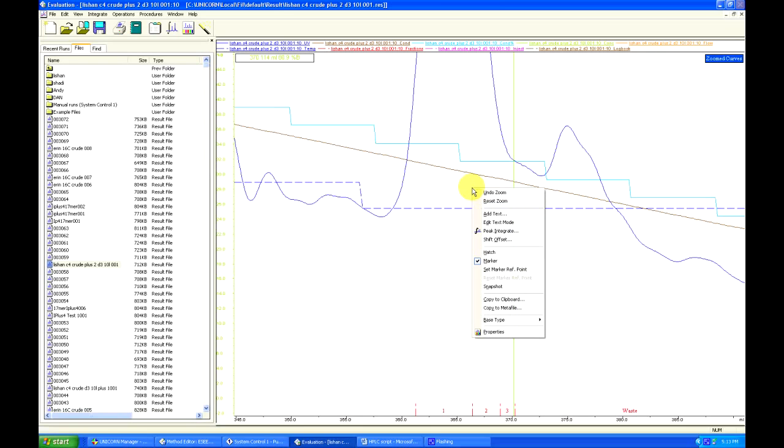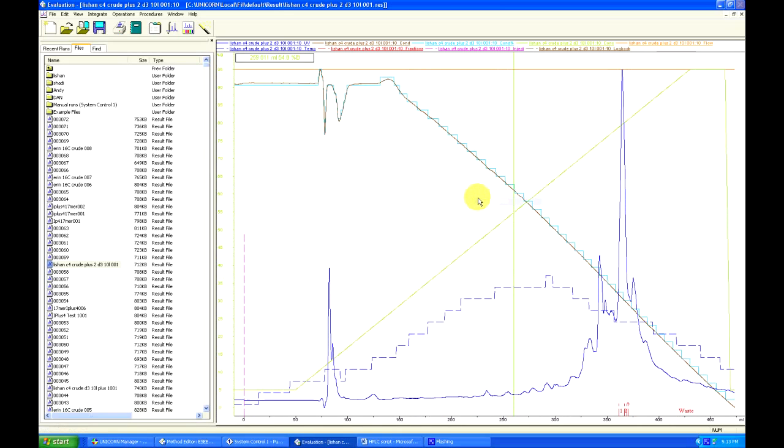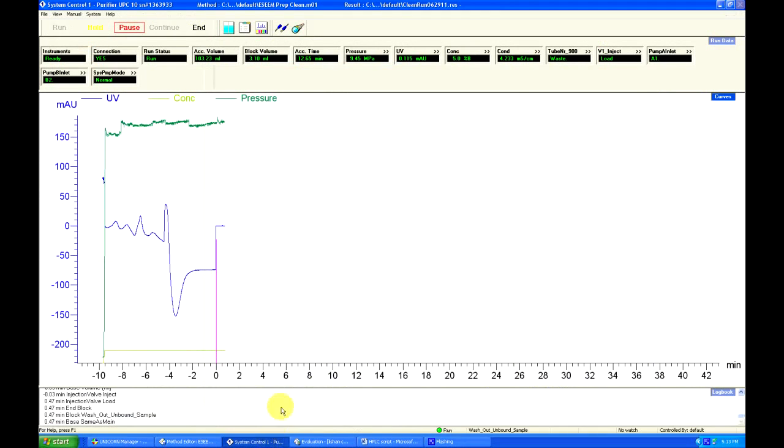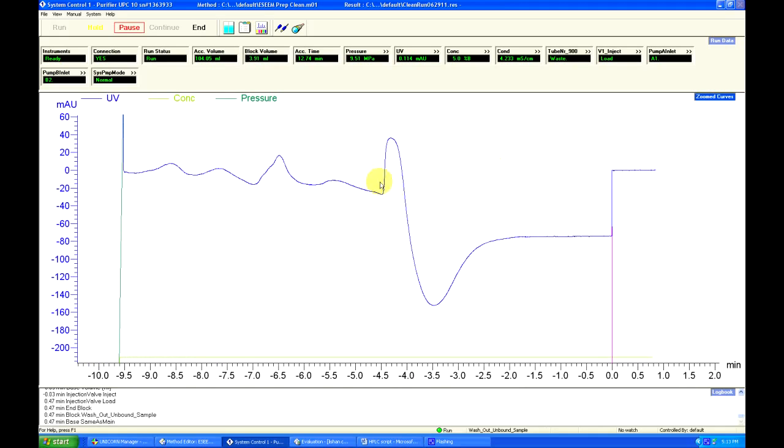Right click and reset zoom resets the zoom, or undo zoom if you want to undo the previous zoom, but not reset the whole thing. This nifty zoom function and the marker are also available in the system control window, so you can actually look at the peaks close up while they're eluding, as well as analyze what percent B they're eluding at.